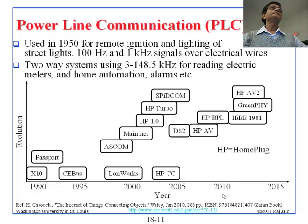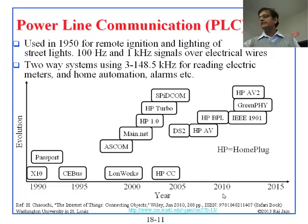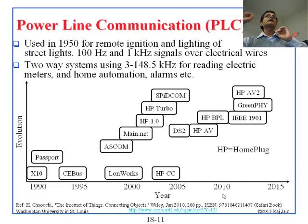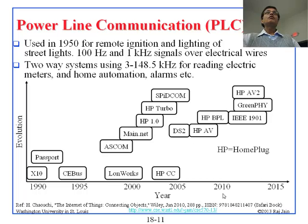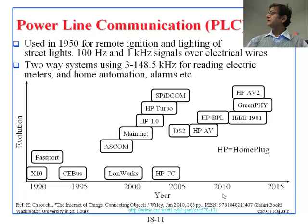The most important thing that happened was HomePlug, around 2000. HomePlug is very useful: when you want an internet connection from one room to another in your house, you buy two HomePlug devices, plug one side and connect to the internet, and the other side will get the internet signal over the electrical wire. HomePlug has many different variations, and there are standards like 1901 and 1905. HomePlug is what we are going to talk about for the rest of this lecture today.